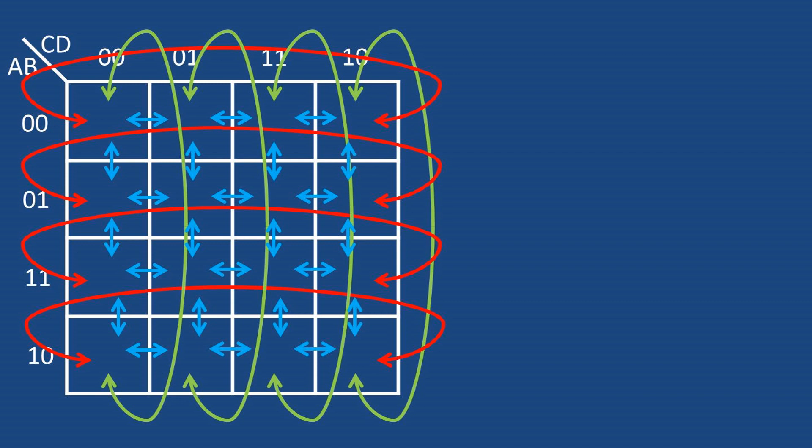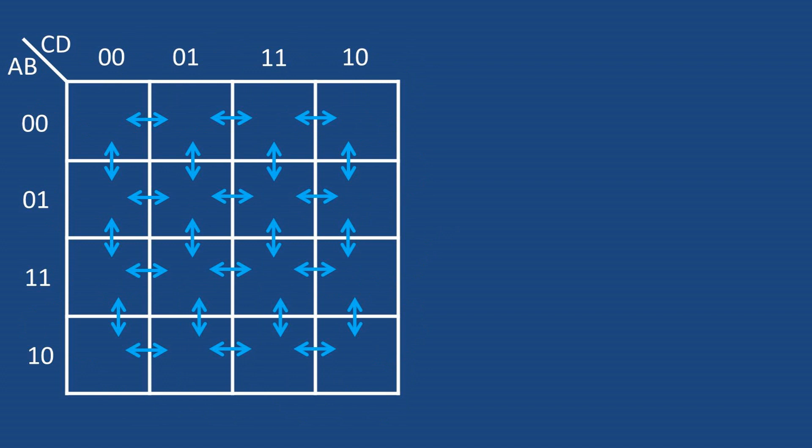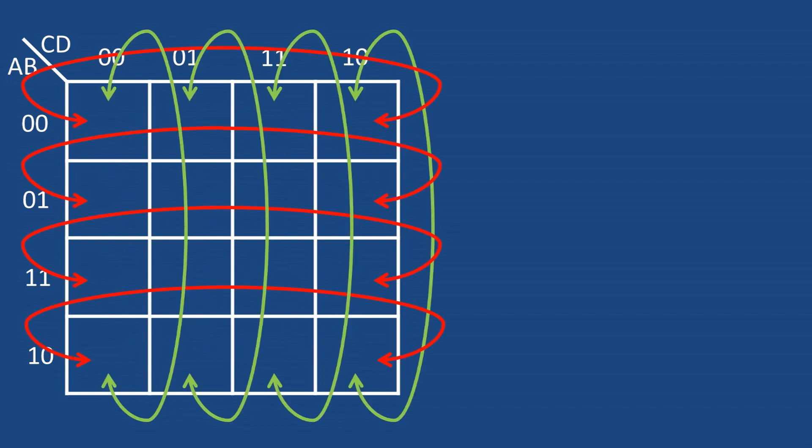You can group variables if they are in adjacent cells within the matrix. Here is a diagram that shows all possible directions you can group variables. We can group the values within the cells from side to side and up and down as depicted. For the values on the edge of the matrix, we can wrap it around to the value on the other side as depicted.